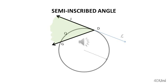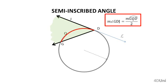In the figure shown, the semi-inscribed angle GDJ is determined by the chord GD and the straight line L. The relation we should remember is that the measure of the semi-inscribed angle is half the angular measure of the arc between the sides of the angle. Then, from the figure, we can say that the measure of angle GDJ is half the angular measure of arc GQD.